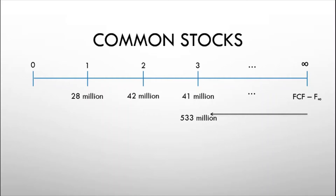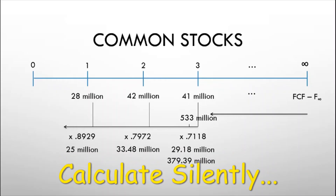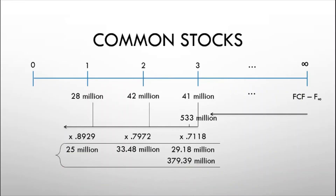To arrive at the firm value as of year 0, we take the present value of each free cash flow individually, discounting back to year 0 using WACC as the discount rate. The PV factor at 12% is 0.8929 for one year, 0.7972 for two years, and 0.7118 for three years. Taking the present value of all these cash flows leads us to a firm value of 467 million pesos.